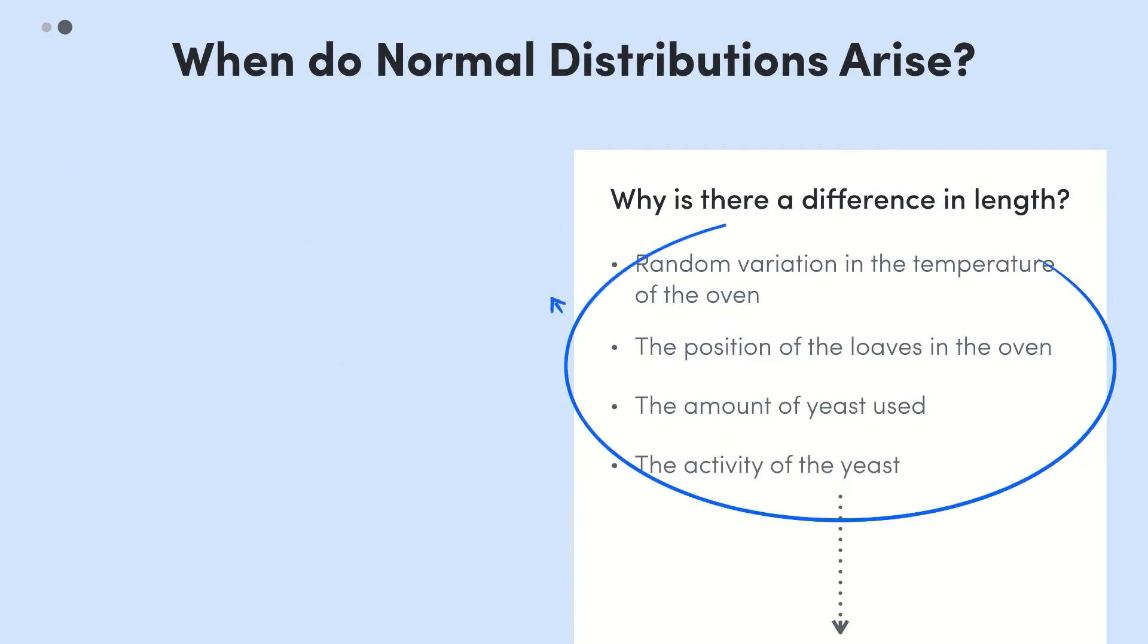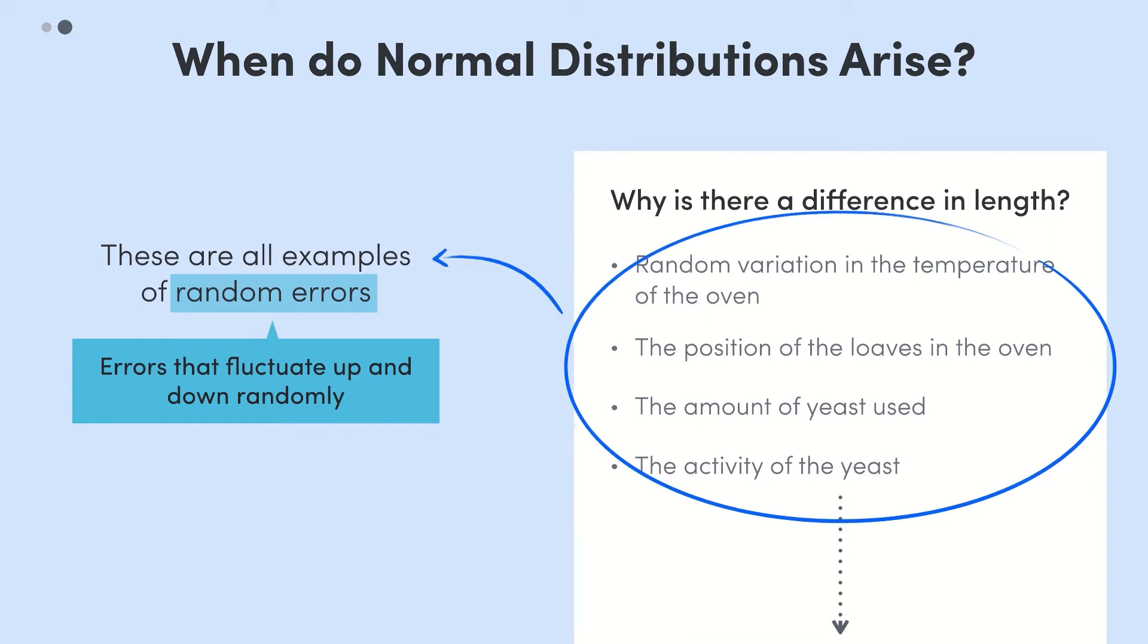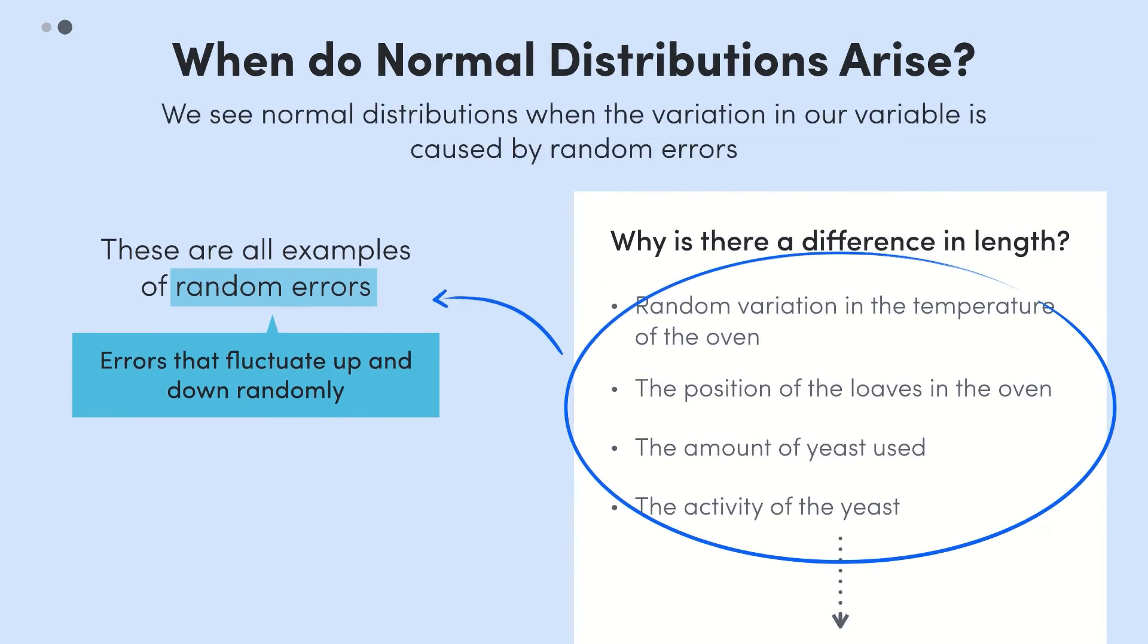These are all examples of random errors, which means that the errors fluctuate up and down in a random manner. So in the real world we tend to see normal distributions when the variation in our variable is caused by random errors. If you bake another loaf of bread the random errors will combine in a way that produces a loaf of different size.